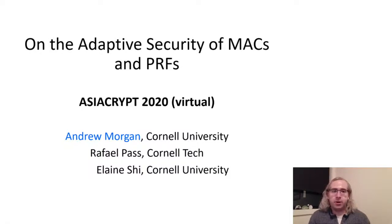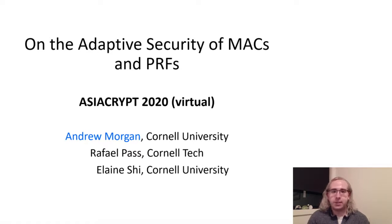My name is Andrew Morgan. In this talk, I'll be presenting work done by myself in conjunction with Raphael Paz and Elaine Shee, which proves a lower bound in the security loss of black box reductions from adaptively multi-user secure message authentication codes and pseudorandom functions to standard assumptions.